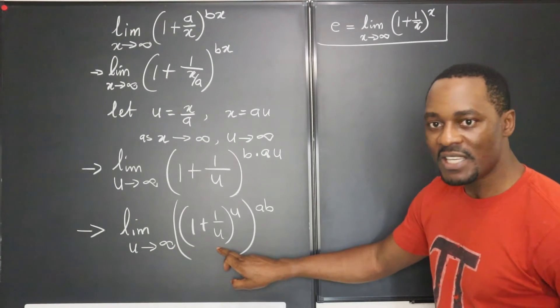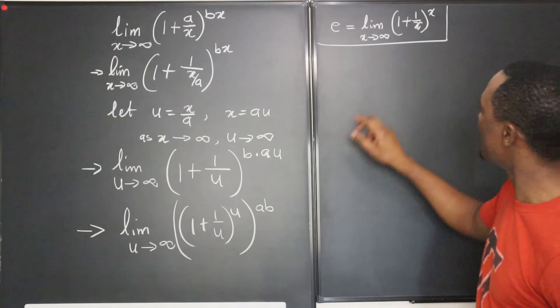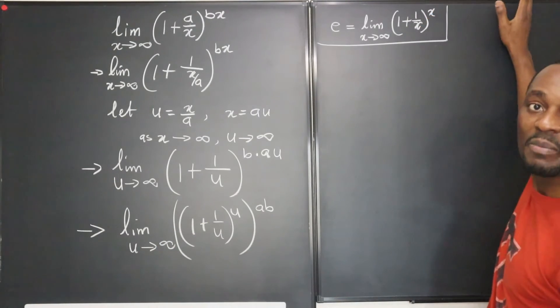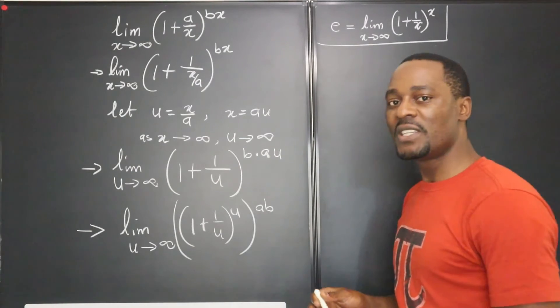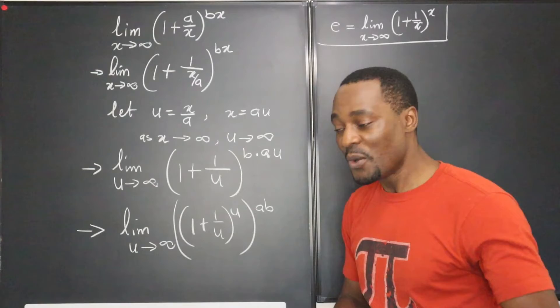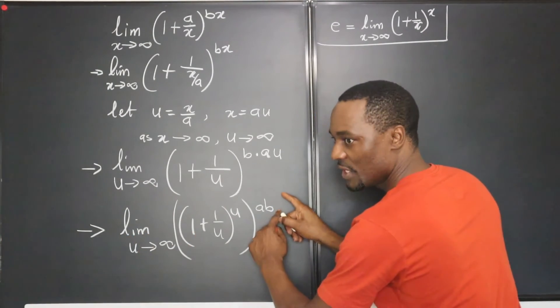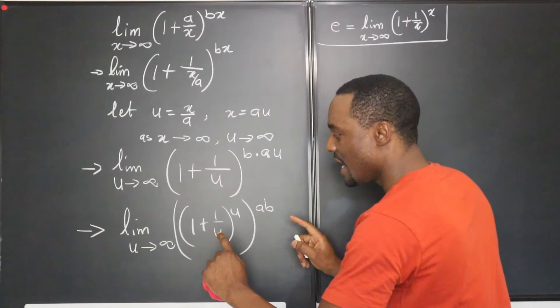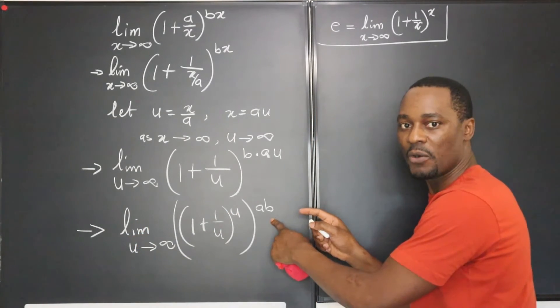We can't just say this is e because it is raised to a power and you're taking the limit of this. This is not raised to any strange power. But there's a limit law that you need to know, which is that the limit of a function is the function of the limit.